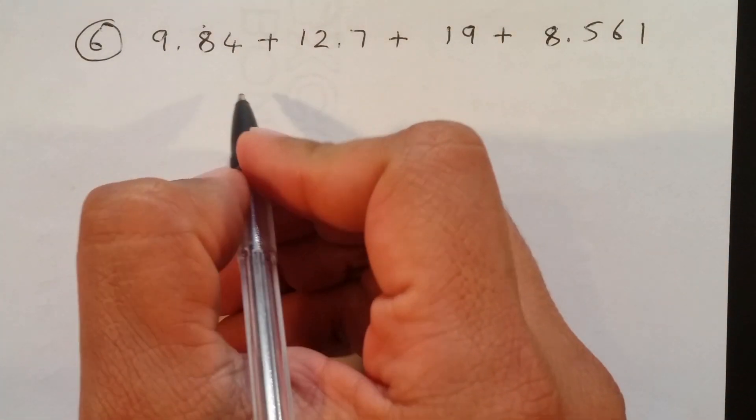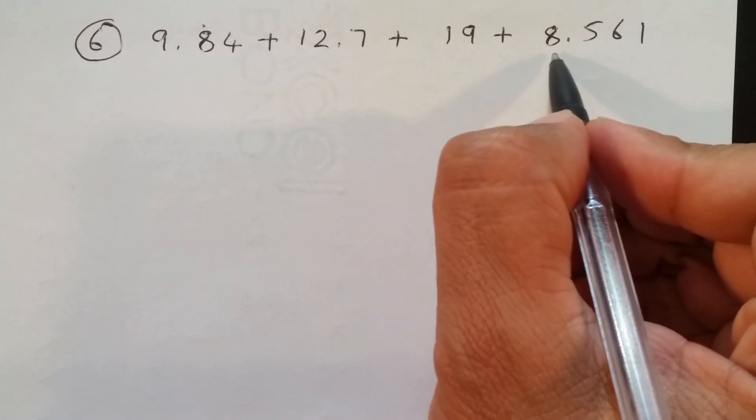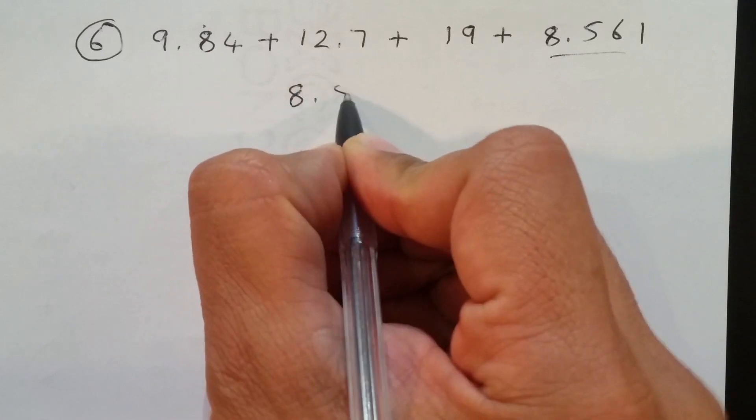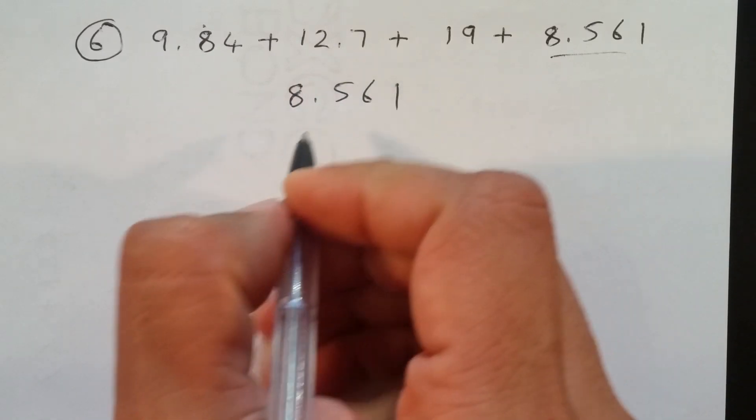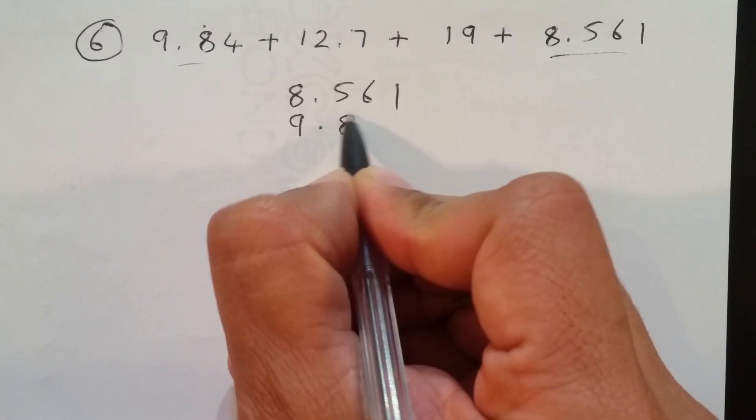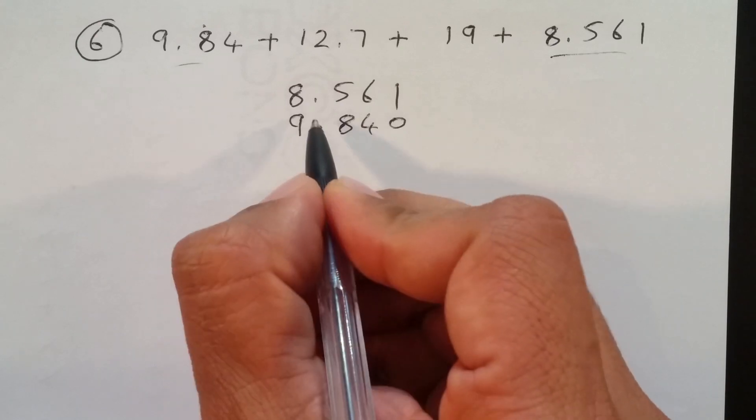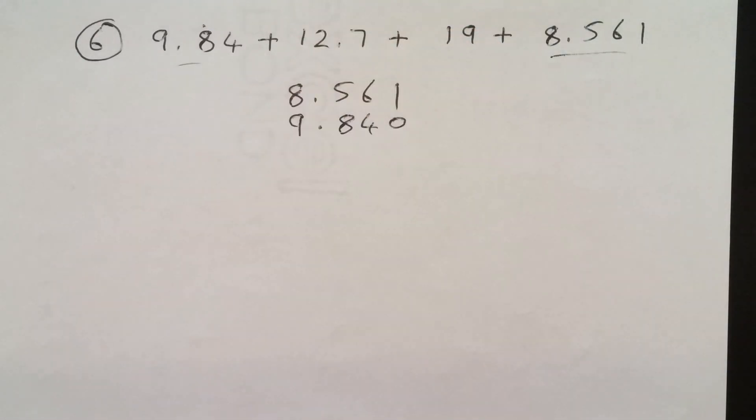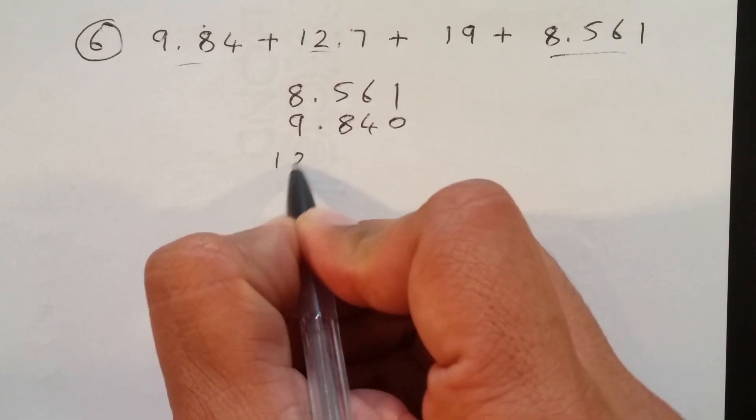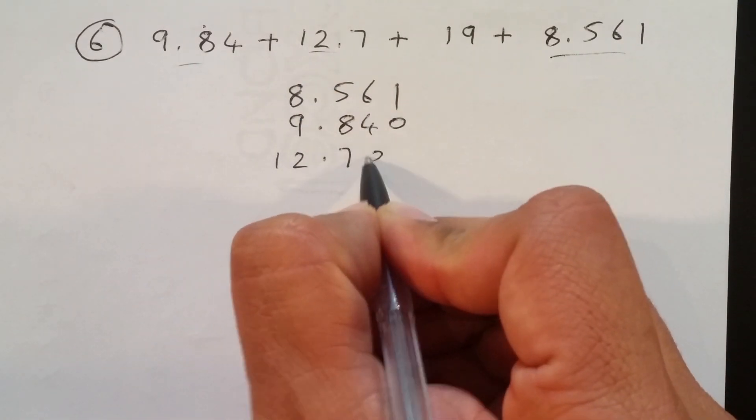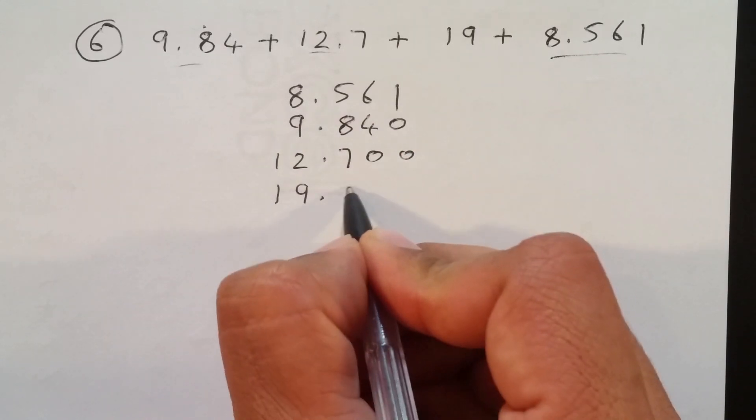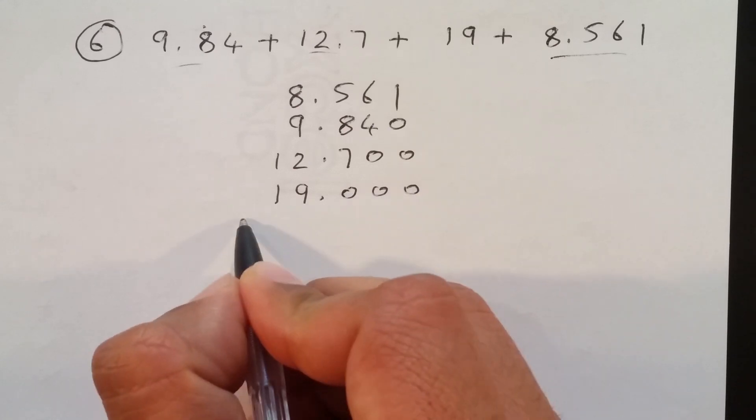The reason I pick people get confused aligning the addition question. So, let's put it. First, we'll start with the longest number, which is this. Which is 8.561. Then we'll go for the second longest one, which is 9.84. If you're confused, add a zero. Make sure decimal should be aligned properly.